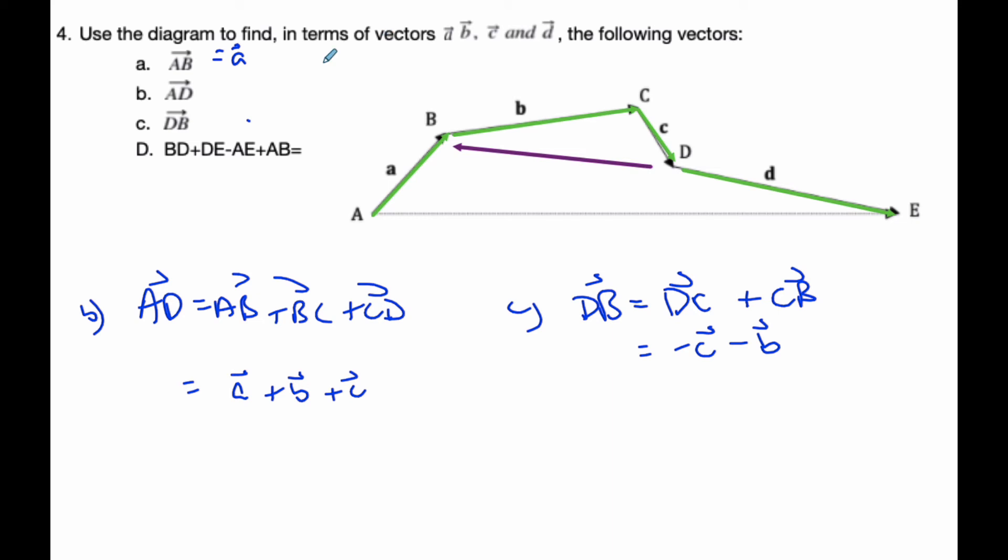And then part d is now asking us to go from B to D. If I follow my trail now, I'm going to go from B to D, and then D to E, and minus A to E. That's the same thing as saying positive E to A, so I'm going to go this way, and then I'm going to go back to A to B.